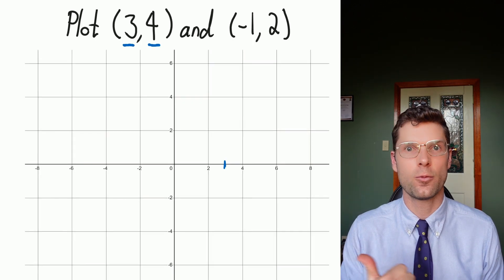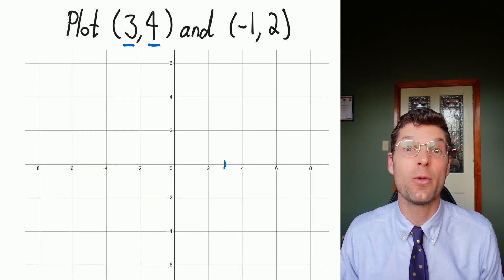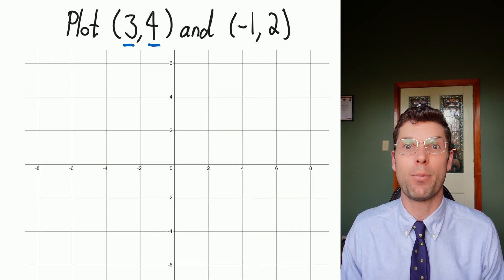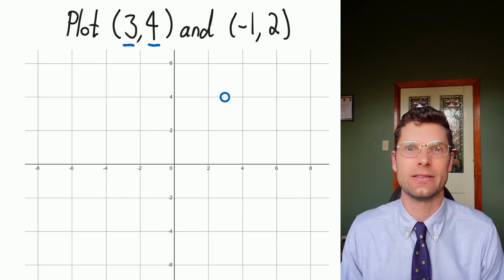Because it's positive, we're heading over to the right. Once we get to that spot, we've gotta go up four because it's positive four, and that's where our point is going to land. All you've gotta do is put a point there.